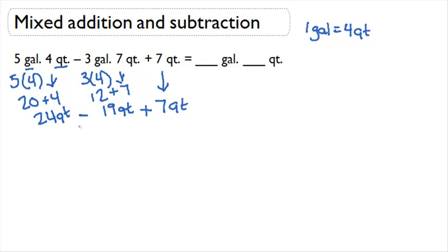So 24 quarts minus 19 quarts is 5 quarts. And then we're going to add to that 7 quarts. 5 plus 7 is equal to 12 quarts.